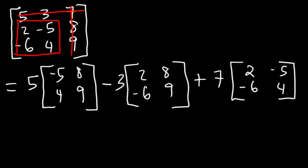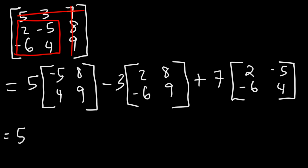At this point, you want to double check your work and make sure that you did everything correctly. Because if you make one mistake, the whole problem is basically doomed — you're going to get the answer wrong. So it's always good to make sure everything looks good. Now let's go ahead and finish it by evaluating the determinant for each 2x2 matrix. So we're going to have negative 5 times 9, which is negative 45, and then minus 8 times 4, so that's 32.